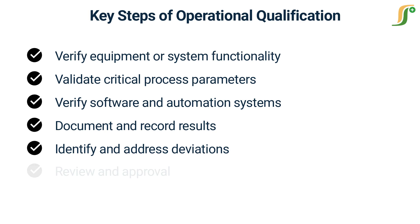Step six: Review and approval. OQ activities are typically reviewed and approved by qualified personnel, such as validation experts, quality assurance personnel, and other relevant stakeholders, to ensure that the qualification activities have been performed correctly and that the equipment or system is suitable for its intended use.